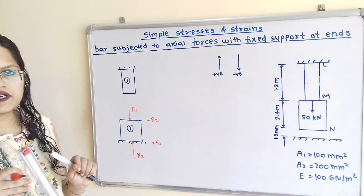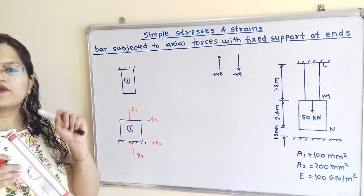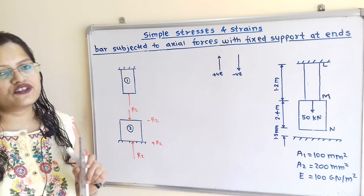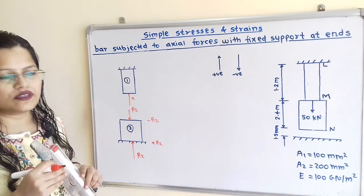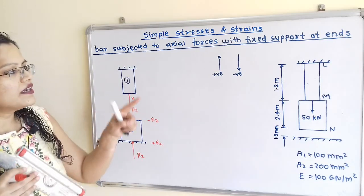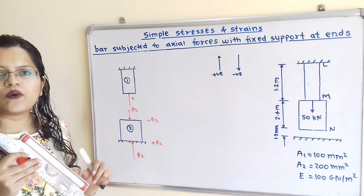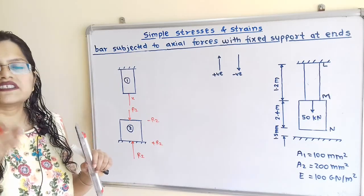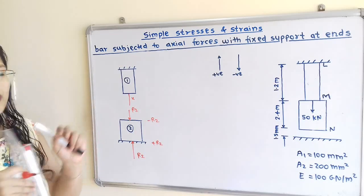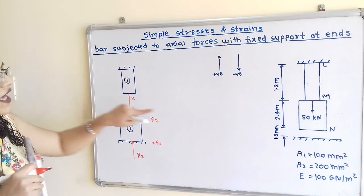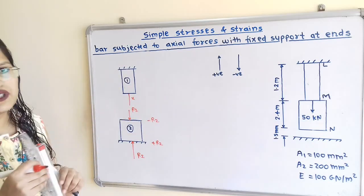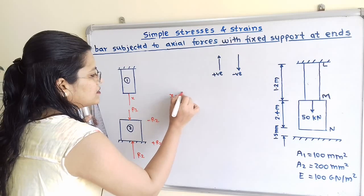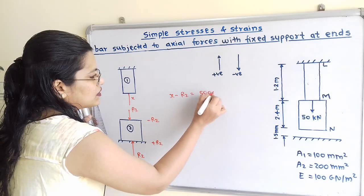Now we will move to bar 1. For its lower end, we don't know the magnitude or direction of the force. So I will draw a line and consider the magnitude as X — this is the unknown magnitude. In between bar 1 and bar 2, a force of 50 kN is given. The standard unit is Newton, so we will consider this as 50,000 Newton. So X minus R2 is equal to 50,000 Newton.